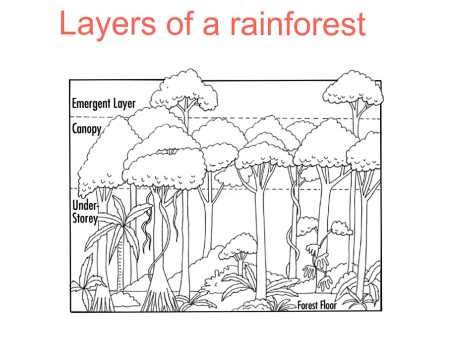There are four layers of the rainforest. The emergent layer is the tallest because the trees are growing up towards the sun. The canopy is underneath the emergent layer, and this blocks out the sunlight, making the forest floor quite dark. Underneath the canopy is the under canopy, or sometimes called the understory.